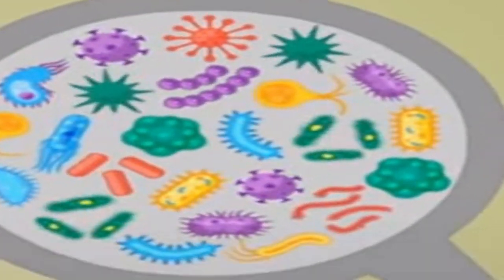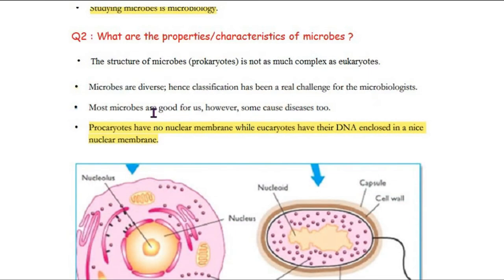The third characteristic is that some microbes are good microbes — there are many microbes in our body which are good. But many microbes can cause diseases and become dangerous. These are the three main characteristics of microbes.